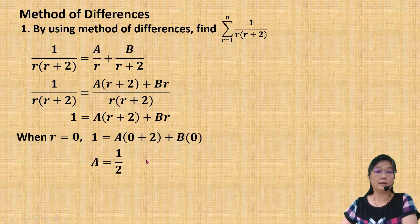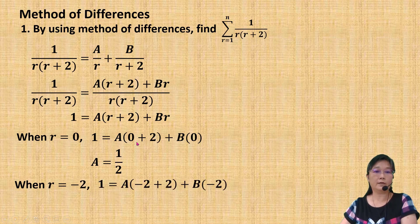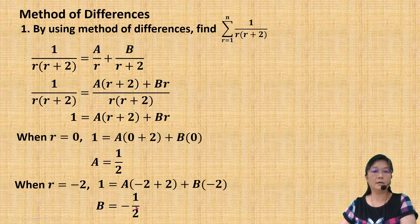Then I am going to choose another value of r. This time I choose r equals negative 2, because when r equals negative 2, A will be cancelled off and I can find the value of B. When I substitute r with negative 2, I get B equals negative 1 over 2. Now, after I have the value of A and B, I substitute them back into the partial fraction.